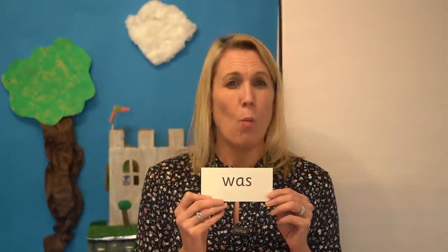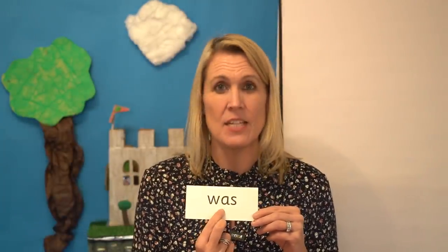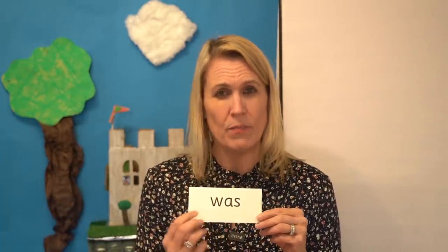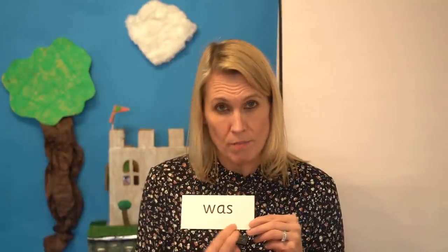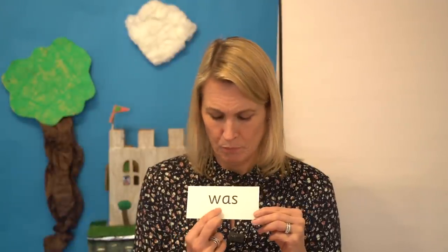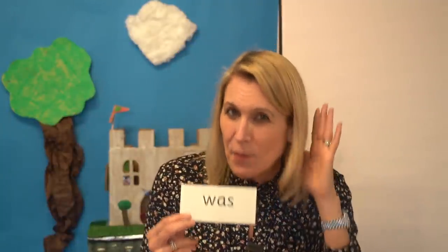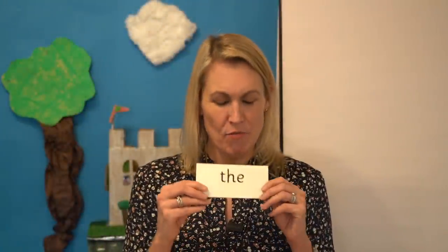Now we are going to read some tricky words. Have a look at this one. Well, the first bit is easy — W — but the second bit is tricky. This says O and this says Z. When I read it, I say W, O, Z — was. Now read the word with me. Ready? W, O, Z — was. Awesome. Now read it yourself. What's the word? Yes. The word is was.